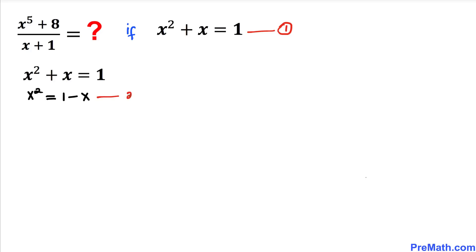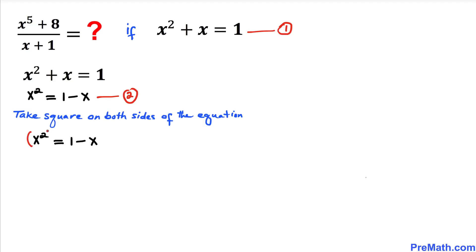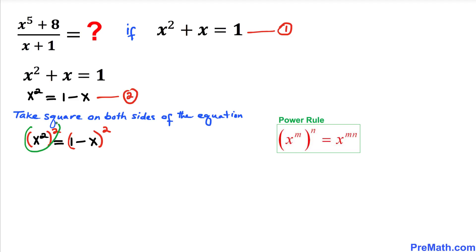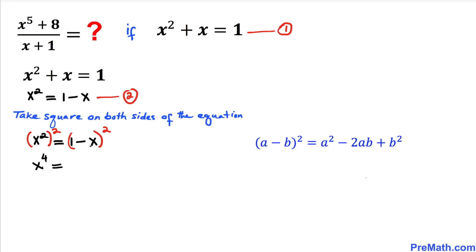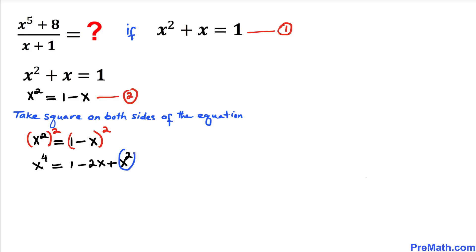Now let's take the square on both sides of equation two. On the left hand side, x squared raised to the power 2 gives us x to the power 4, using the power rule of exponents. On the right hand side, we expand the binomial using the identity (a minus b) squared, giving us 1 minus 2x plus x squared.